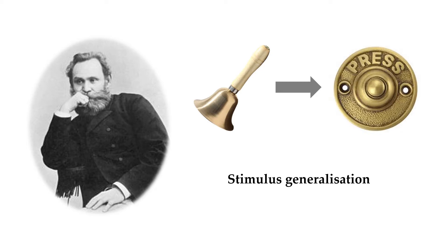However, if the buzzer was sounded over and over but not paired with food, the dog would eventually learn not to respond with salivation. And if the bell was still occasionally paired with the food, then generalisation would decrease as the dog now learns to respond only to the sound of the bell and not the buzzer. This is called stimulus discrimination.